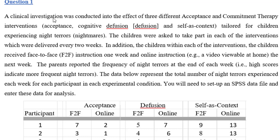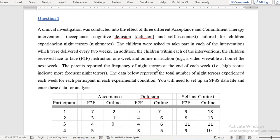A question statement: a clinical investigation was conducted to find the effect of three acceptance and commitment therapy interventions. The interventions are acceptance, cognitive diffusion, and self-as-context, tailored for children experiencing night terrors. The children took part in each of the interventions done after two weeks. Within each intervention, children received face-to-face instruction one week and online instruction another week. The online instruction was performed with a video at home. Parents reported the frequency of night terrors at the end of each week. These numbers show the frequency of night terrors. Now we will import this data into SPSS.